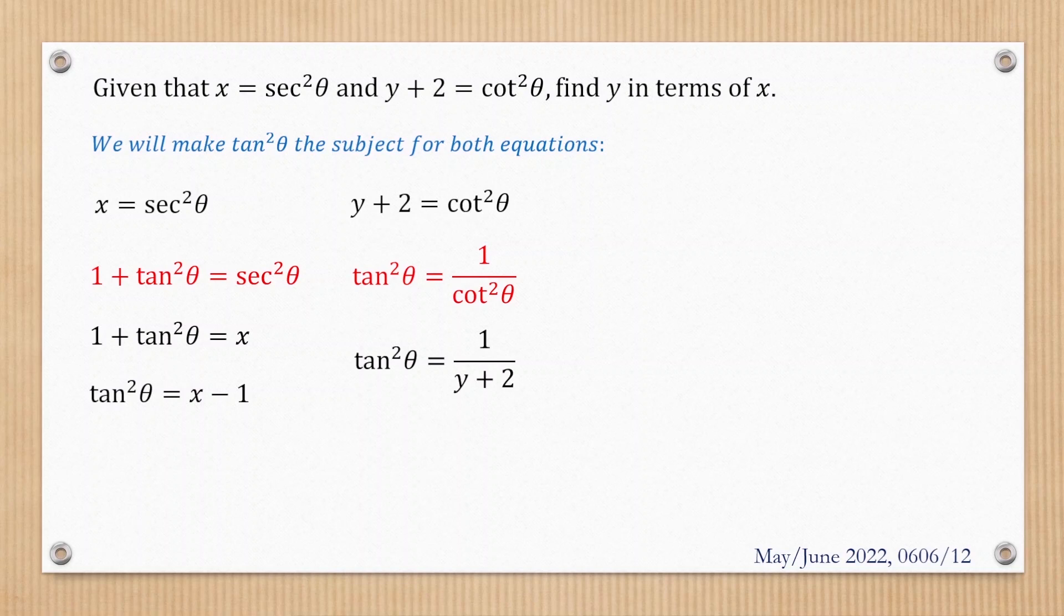Now, both equations equal tan²θ, so we can combine them. We'll have x minus 1 equals 1 over y plus 2.